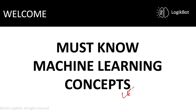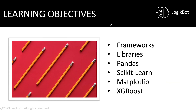Welcome to lesson six of Must Know Machine Learning Concepts for the real world. Here are our learning objectives: we're going to learn about frameworks, libraries, and yes, there is a difference between frameworks and libraries. We'll talk about the most used libraries in machine learning, Matplotlib, and everyone's favorite, XGBoost.